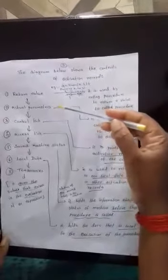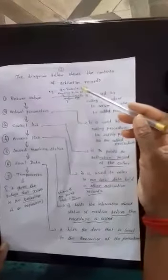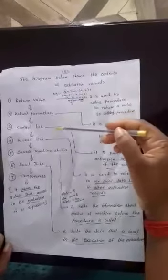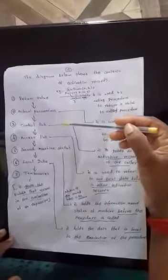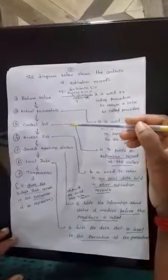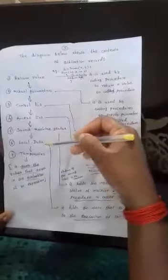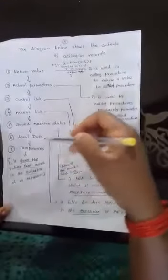The return value is used by the calling procedure to return a value to the called procedure. Actual parameters are the values passed from the function call to the function definition. Control links point to the activation record of the caller. Access links refer to non-local data held in other activation records. Saved machine status stores the saved information of the machine. Local data holds the data local to the execution of the procedure. Temporaries store values that arise in the evaluation of expressions.